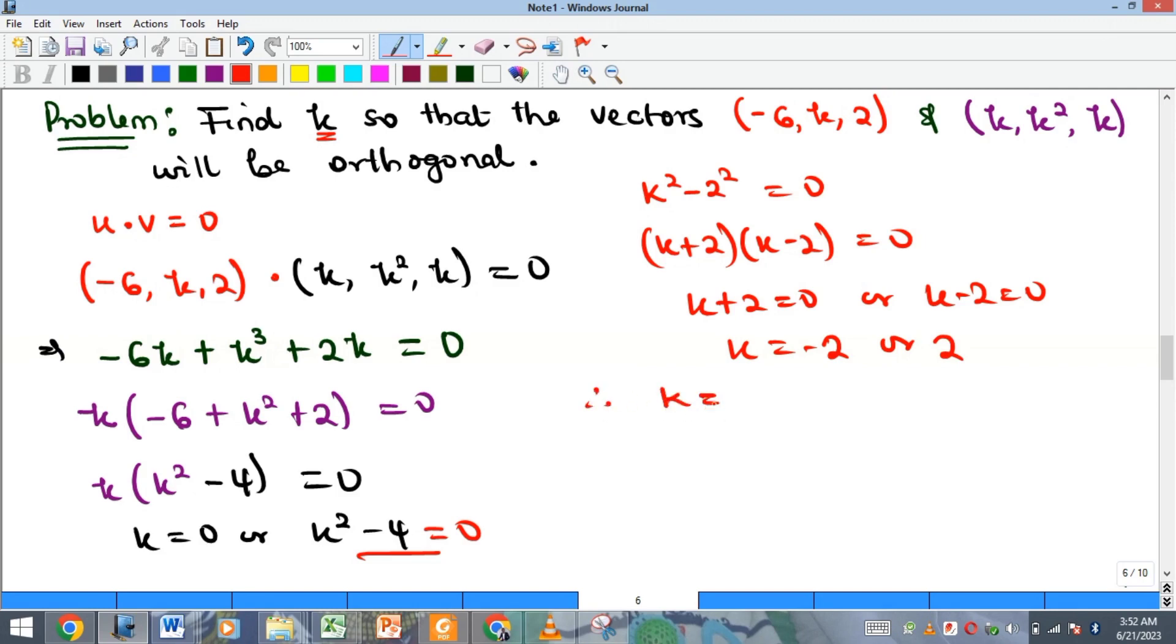So that means here our k is negative 2 or positive 2. So these are the three values or possible values of k.